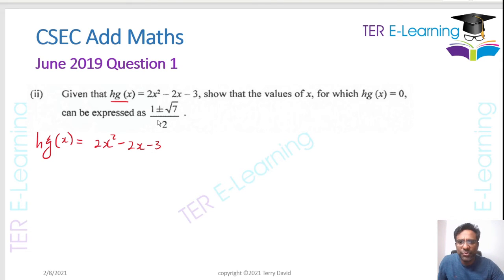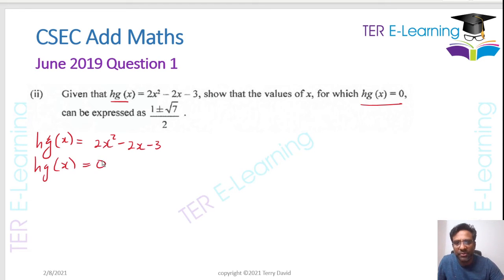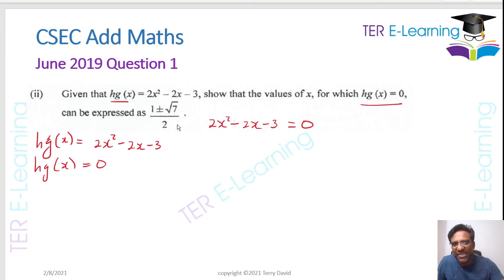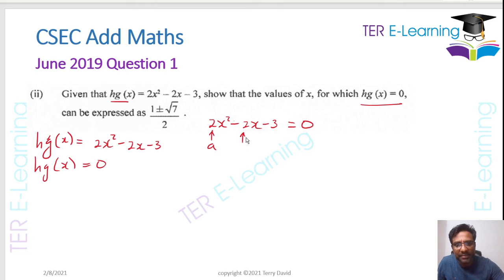We want to solve h(g(x)) = 0. So we need to solve 2x² − 2x − 3 = 0. This is a quadratic. We're told the answer involves 1 ± √7 divided by 2, so we just need to verify using the quadratic formula. Here a = 2, b = −2, and c = −3.